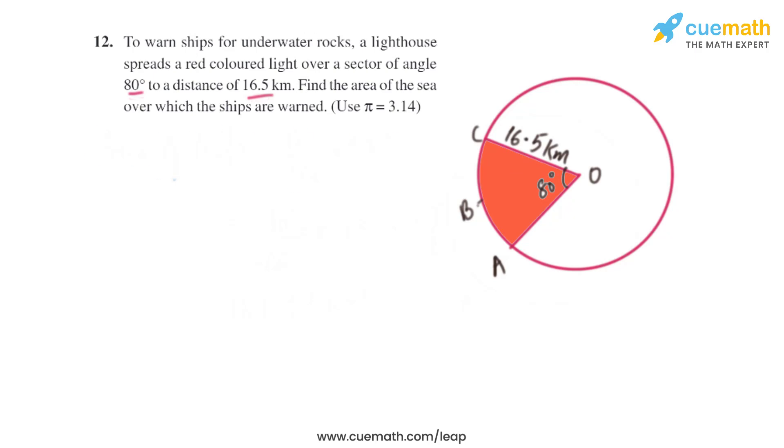We know the formula to find the area of sector, that is theta divided by 360 degrees multiplied by pi r squared. Theta is 80 degrees divided by 360 degrees, pi is given that is 3.14, and the radius is also given, that is 16.5 kilometers.